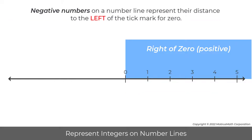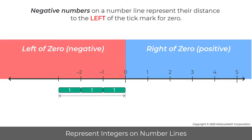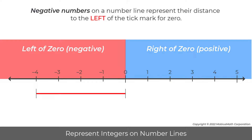Negative numbers on a number line represent their distance to the left of the tick mark for zero. For example, a bar to the left of zero with a length of one measures the distance from zero to negative one on the number line. Two of these bars measure the distance from zero to negative two. Three of these bars measure the distance from zero to negative three. A negative number can be represented by an arrow that measures from zero to that number and points in the negative direction, which is to the left.